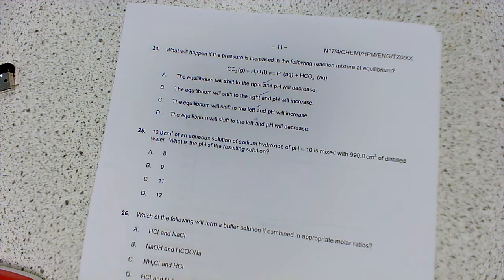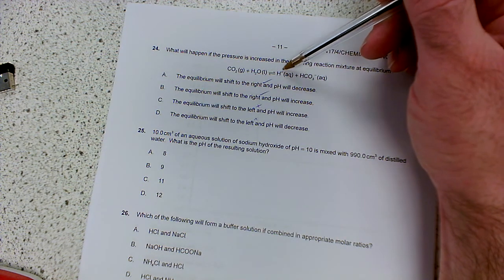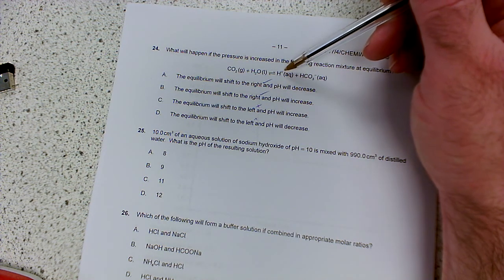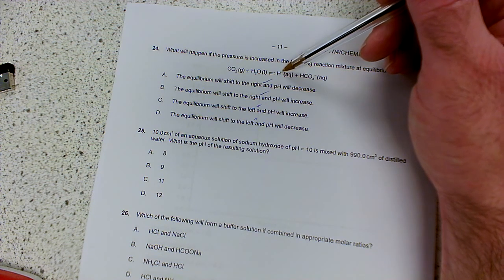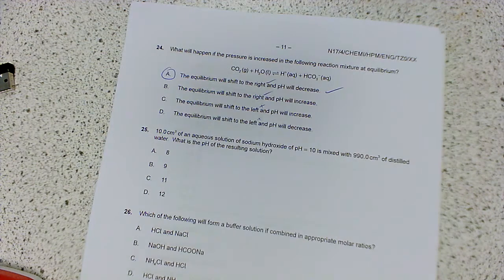And then the pH will increase or decrease. Well, if it shifts to the right, it's going to increase the concentration of hydrogen ions. And that's basically, the higher the concentration of hydrogen ions, the lower the pH, the more acidic it is. So the pH will decrease. So we want to go with this one.